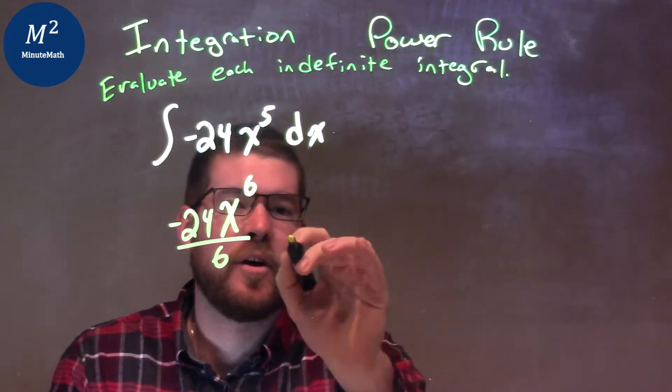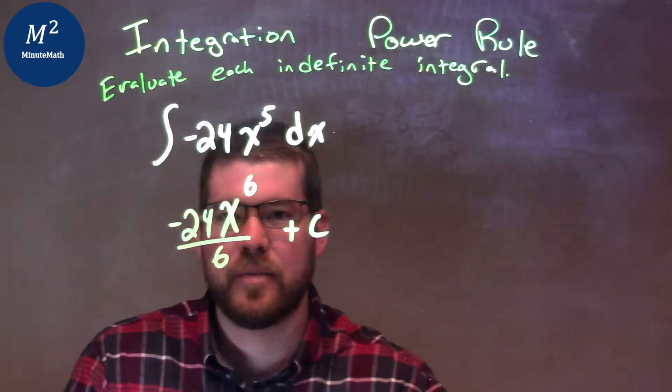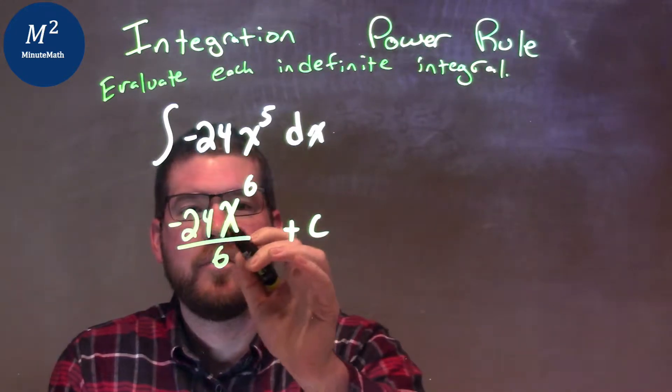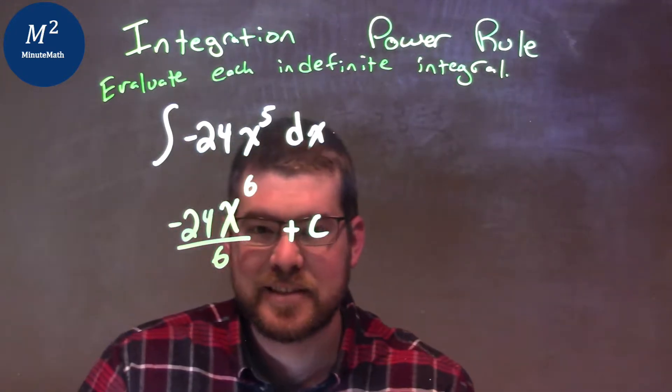Now, I can't forget, there's nothing else there, so I have my plus my constant. So now I have negative 24x to the 6th power divided by 6. Okay?